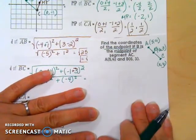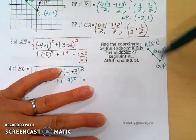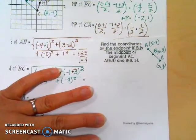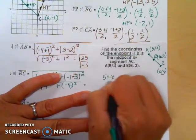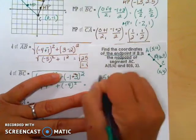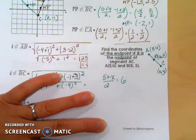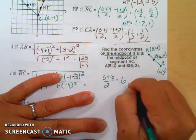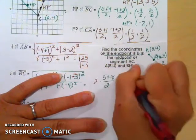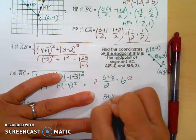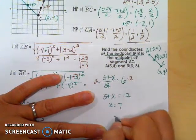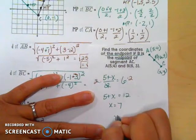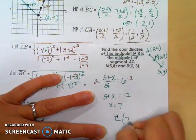Here we're working a little bit backwards. If I know the midpoint formula, I add the endpoints and divide by 2 to get the midpoint. This time I know one endpoint and the midpoint, and I'm trying to find the other endpoint. So I take 5 plus x divided by 2, and that should equal the x portion of my midpoint, which is 6. Multiplying both sides by 2, the 2's cancel, giving 5 plus x equals 12. Subtracting 5 gives x equals 7 — so the x portion of endpoint C is 7.